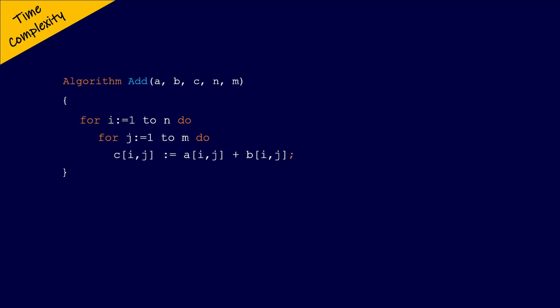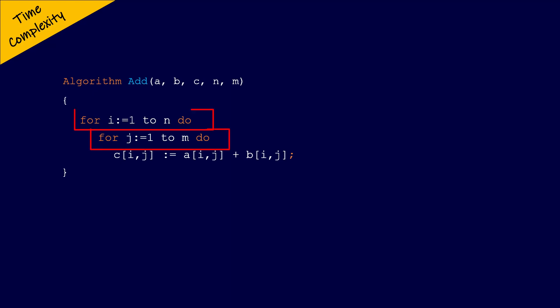This algorithm computes the sum of matrix A and matrix B and stores the result in matrix C. The parameters are A, B, C which are the matrices, and the parameters N and M are the number of rows and columns of the matrices. Before computing the time complexity, we will look at how this algorithm works — specifically how many times the for loop will execute its operations. Let us consider we have matrix A and matrix B with two rows and three columns, so we will pass N as 2 and M as 3 to this algorithm.